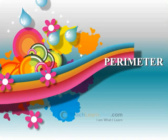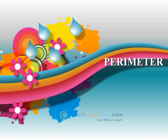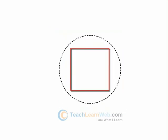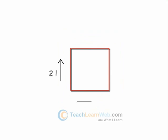Perimeter. It is the space around a closed object. It is equal to 2L plus 2B.